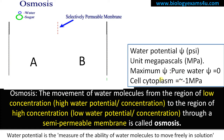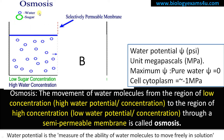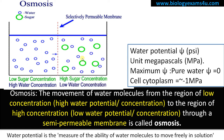Now let us take an example to understand water potential in terms of osmosis. These are two solutions, A and B. The blue color represents water and the green color represents sugar. In solution A, you can see there are only water molecules — there is high water concentration, high water potential, and low solute concentration. In solution B, sugar has been added, so there is high sugar concentration and comparatively low water concentration.